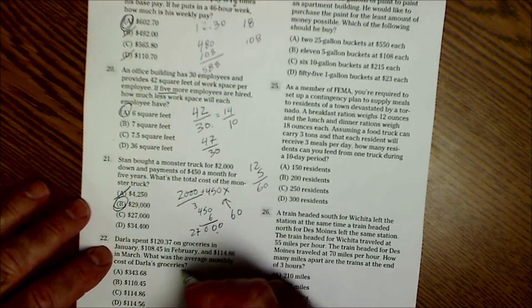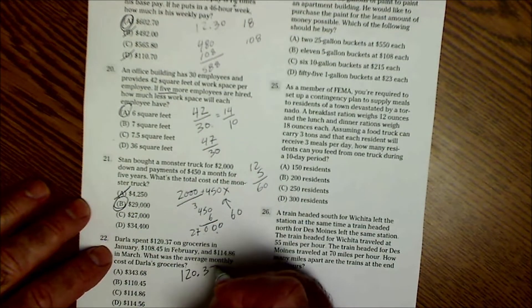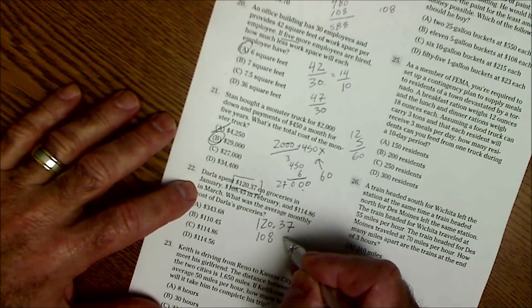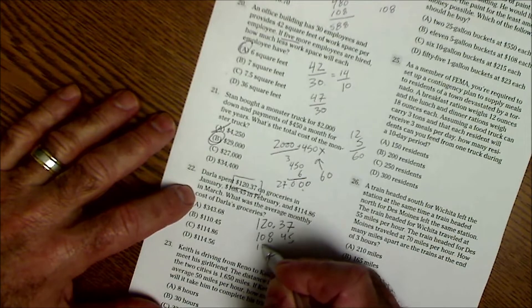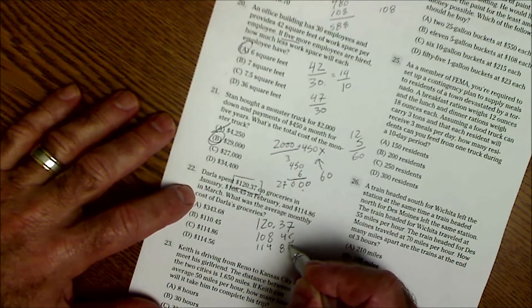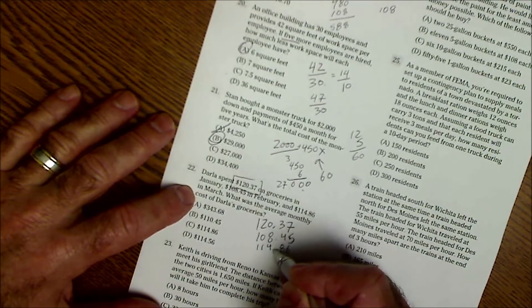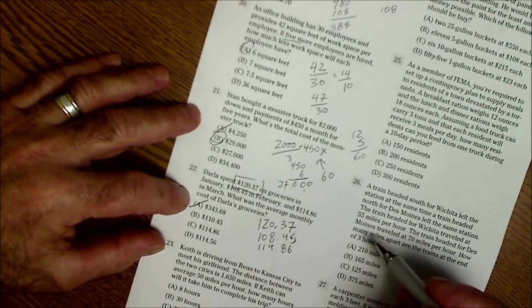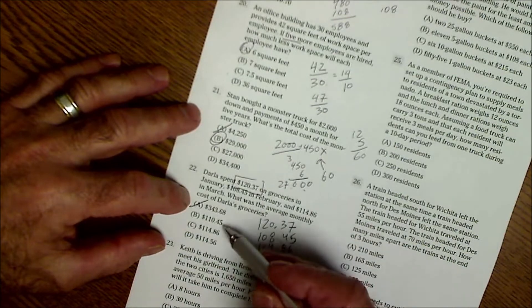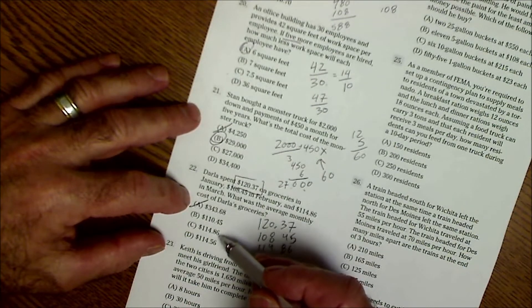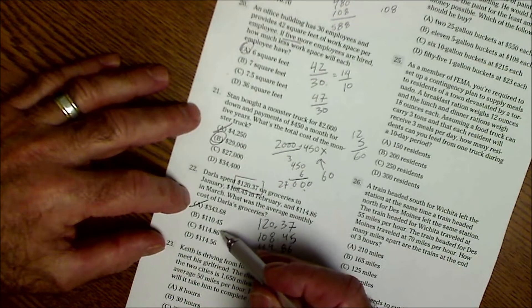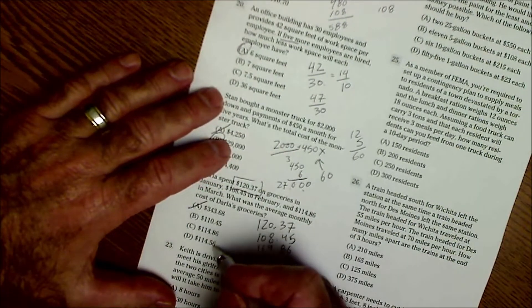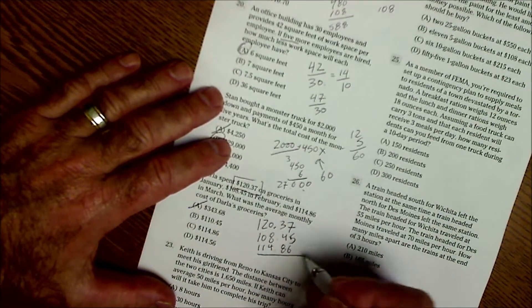So Darla spent $120.37 on groceries in January, $108.45 in February, $114.86 in March. What's the average cost? Well, this one doesn't even make sense. It's way out of a ballpark. It's probably the sum of these. So it's got to be between these three. But these two are so close. I know it's going to be one of these two right here.